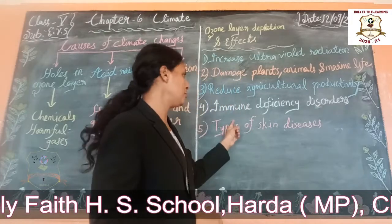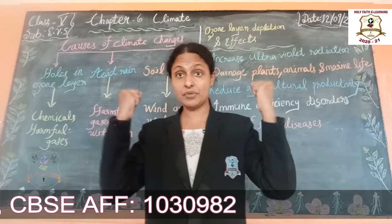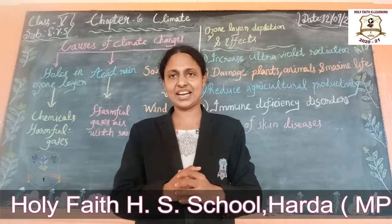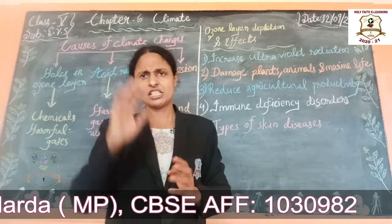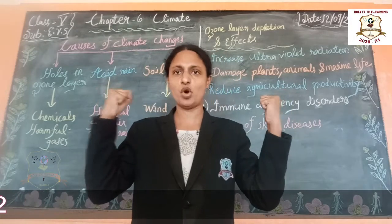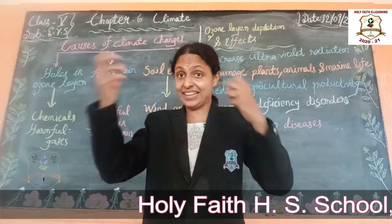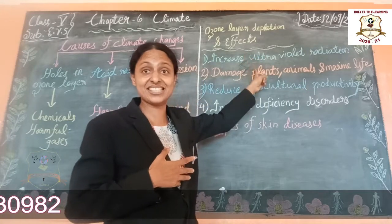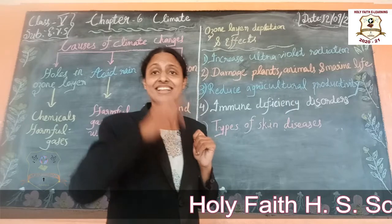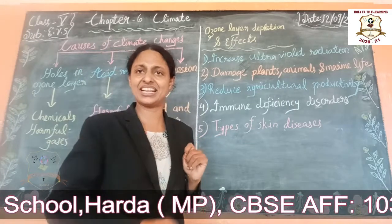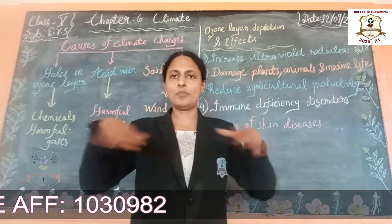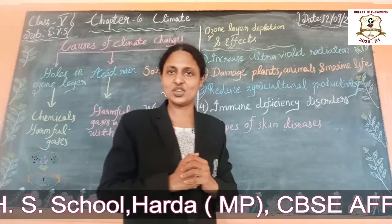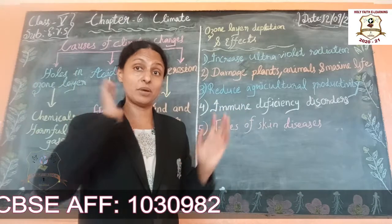Then there is immune deficiency disorder. We have an immune system in our body — our immunity power helps resist and protect from diseases. Ultraviolet rays can affect our immunity system, lowering our immunity power, making us vulnerable to diseases like typhoid and malaria.